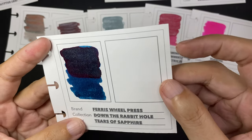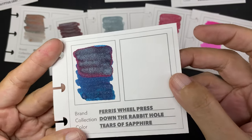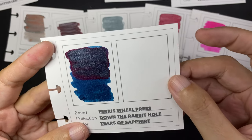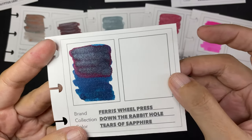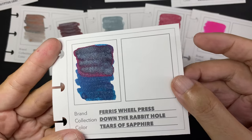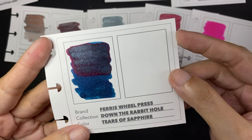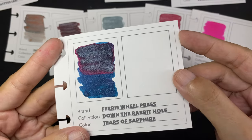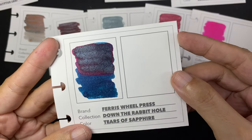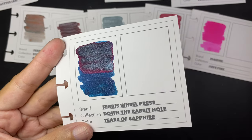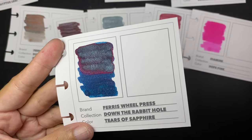This is Tears of Sapphire, and it is so gorgeous. It is a dark blue ink with a very noticeable red sheen. And the shimmer is actually a metallic light blue. It is super, super gorgeous. And the moment I saw this ink, I knew what pen to ink it in, which will be in a different video.